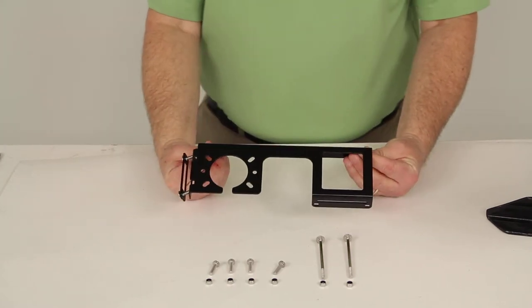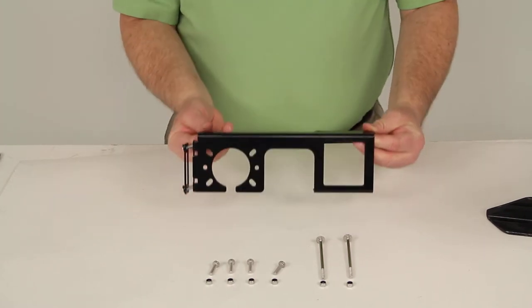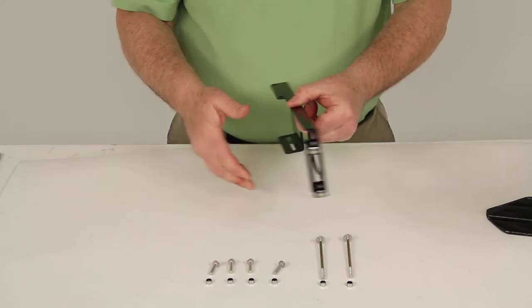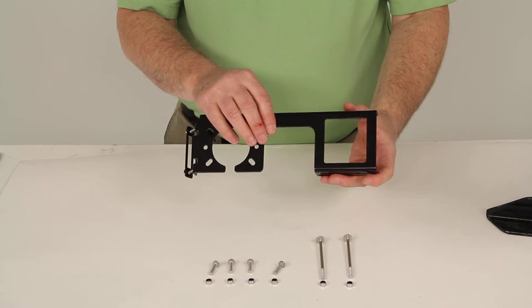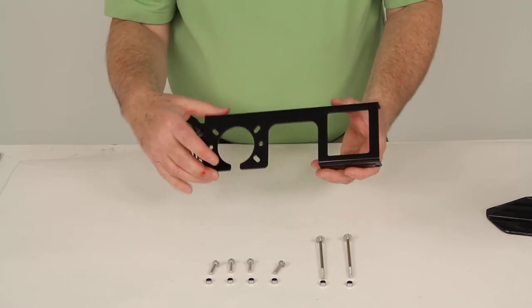Today we're going to review part number C-58000. This is the Curt Easy Mount electrical bracket. Basically this bracket would mount onto a 2-inch trailer hitch receiver.